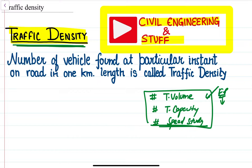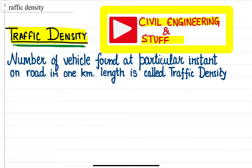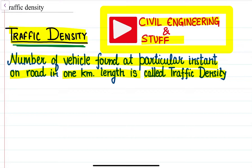In this lecture, we are going to discuss about what is traffic density and how it is related to traffic volume and traffic speed. Traffic density is defined as the number of vehicles found at a particular instant on the road in one kilometer length.